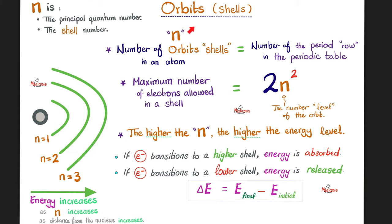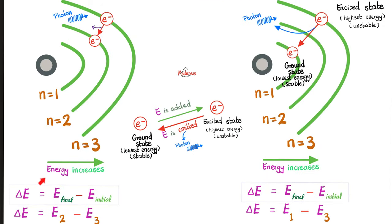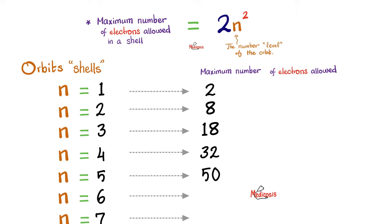If I am the first electron shell, what's the maximum number of electrons allowed? Easy — n equals 1, so 1 raised to the second power is 1, times 2 is 2. The maximum number of electrons is 2. For the second shell: 2² = 4, times 2 = 8 maximum electrons. For the third shell, plug in 3 and you get a total of 18 maximum electrons. So: first shell = 2, second = 8, third = 18, fourth = 32, and so on.